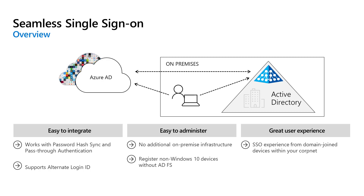One of the best things about hybrid Azure AD is the ability to do seamless single sign-on. My computer joined to a Windows Server Active Directory environment — with either password hash sync or pass-through authentication enabled — can also enable seamless SSO onto any third-party web apps or Office 365. I will never be prompted for a username and password. That's pretty awesome.